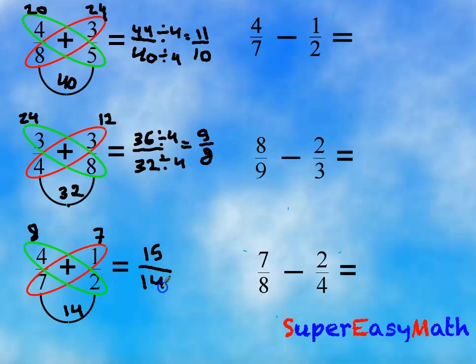Now for subtraction: 4 over 7 minus 1 over 2. The first wing: 2 times 4 equals 8, and the second wing: 7 times 1 equals 7. The denominator: 7 times 2 equals 14. So we will have 8 minus 7, which is 1 over 14. It's simplified.